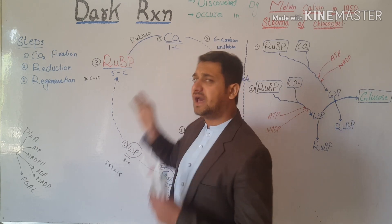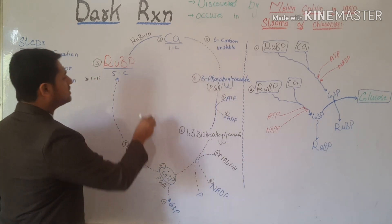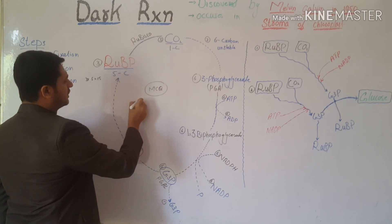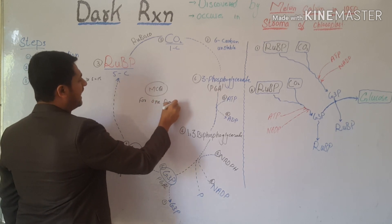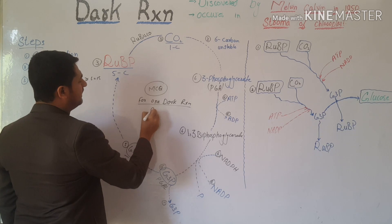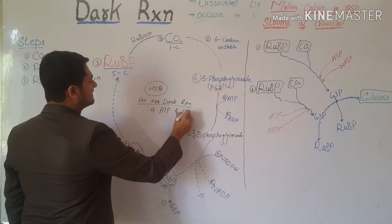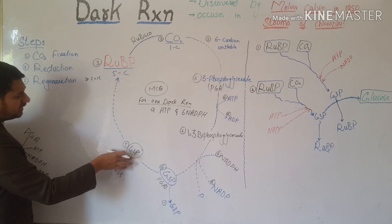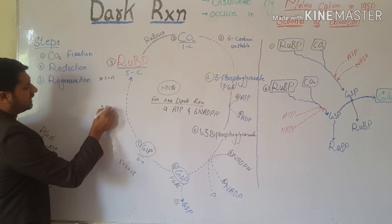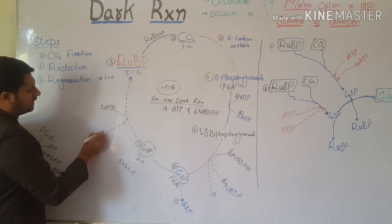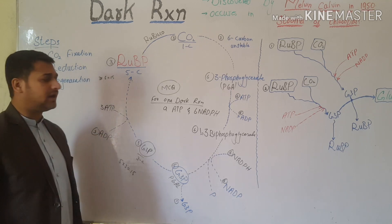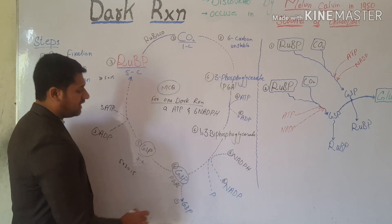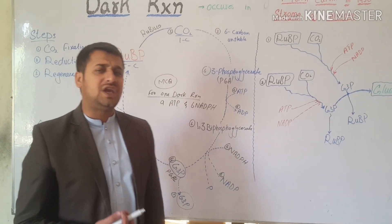For MCQs, these numbers are important: for one dark reaction (one turn of the Calvin cycle), 9 ATP and 6 NADPH are required. The regeneration of G3P back into RuBP requires 3 ATP, which are converted to ADP. So in total, 9 ATP and 6 NADPH are required for one dark reaction, and the product of one dark reaction is one G3P molecule.